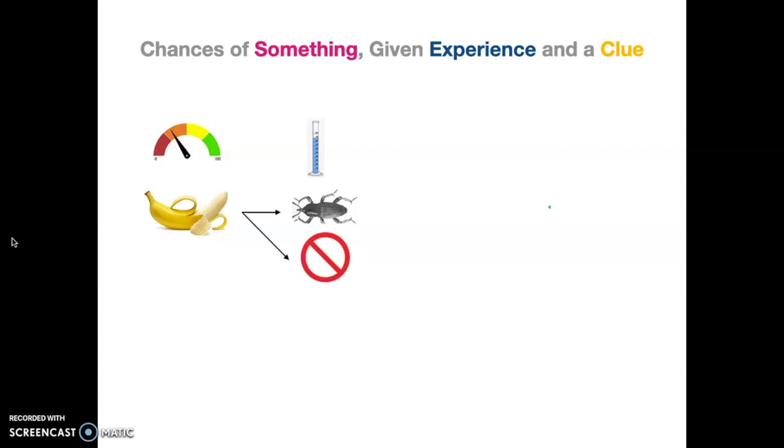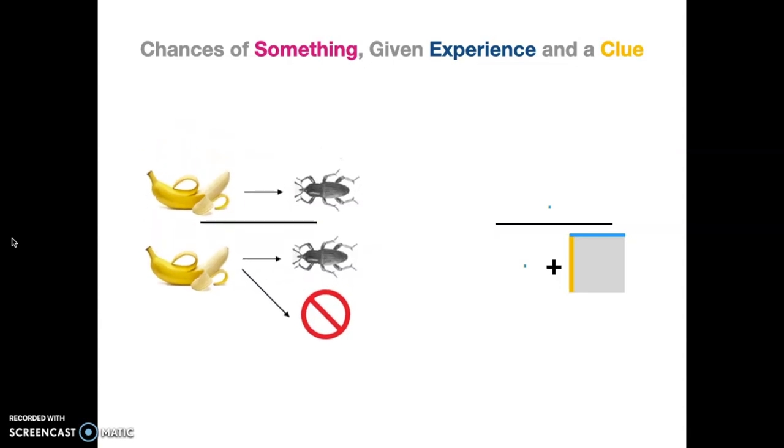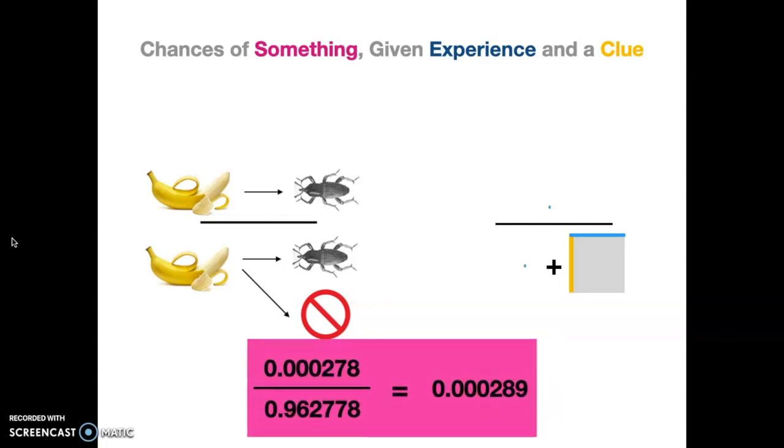We have to look at all the cases. So we have to look at the possibility that there is a bug and there is not a bug. So what we do is you take both of those possibilities, add them together, and you divide our base case by both of those possibilities. So the base case top there being that we found a bug in a banana with no spot in it, and the bottom being both cases together. So essentially what we're doing is we're dividing that top base case of bug in a clean banana, apparently clean banana, by both cases and getting our number, which is 0.000289.